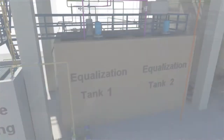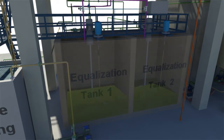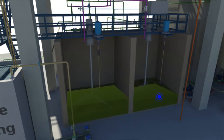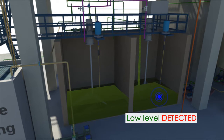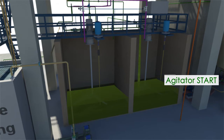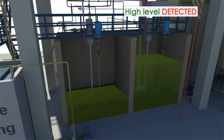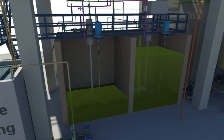Once the effluent in the equalization tank reaches a predefined level, a signal is generated by the level sensor to start the agitator. After reaching the high level of the tank, a signal is initiated to start effluent flow into the second equalization tank.